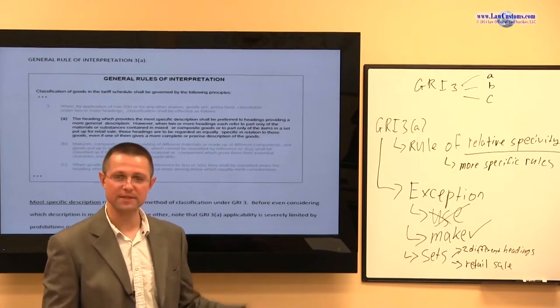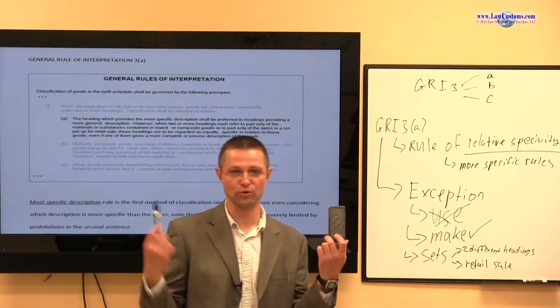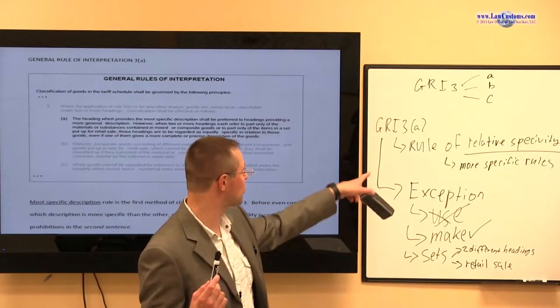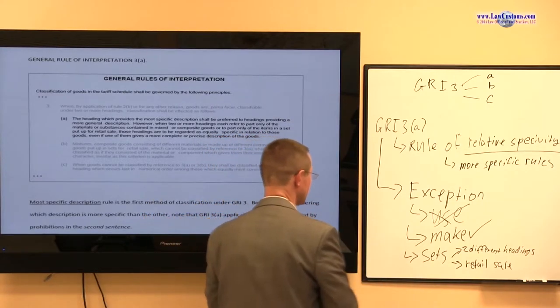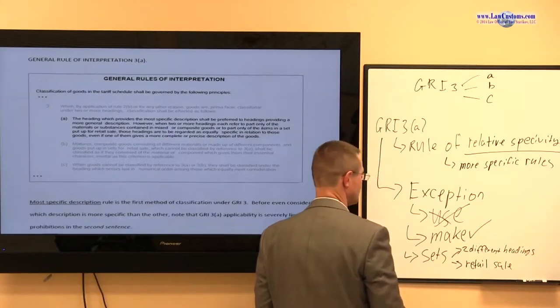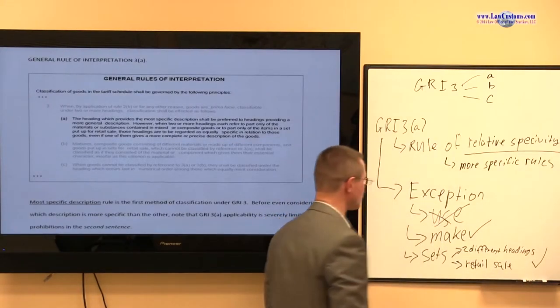It may be a set when you bring it for the importation, but really, when the end consumer sees the product, they do not see it as a set. They see it as separately sold items. And that kills the purpose. So, for sets, if you have sets which are classifiable under two more headings, rule of relative specificity is not applicable.